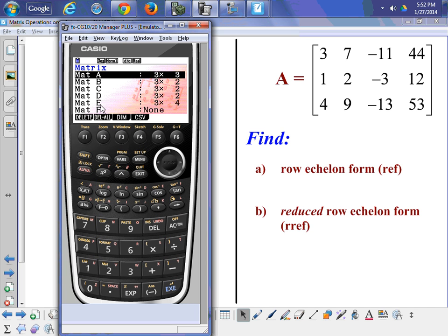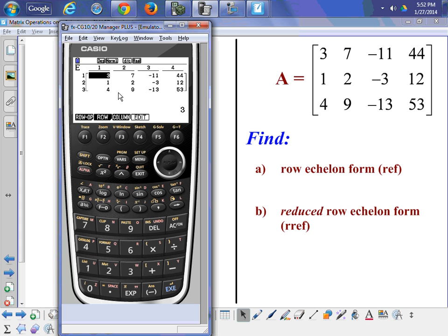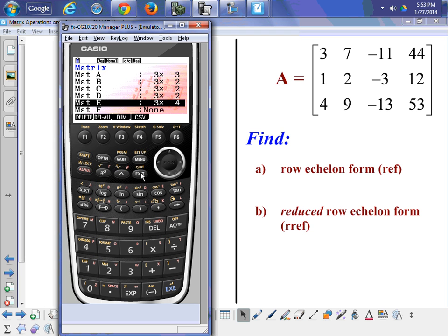It's a 3x4 matrix. If I scroll down, you can see the numbers: 3, 7, -11, 44; 1, 2, -3, 12; 4, 9, -13, 53. I'm going to exit out. So I have it in matrix E.